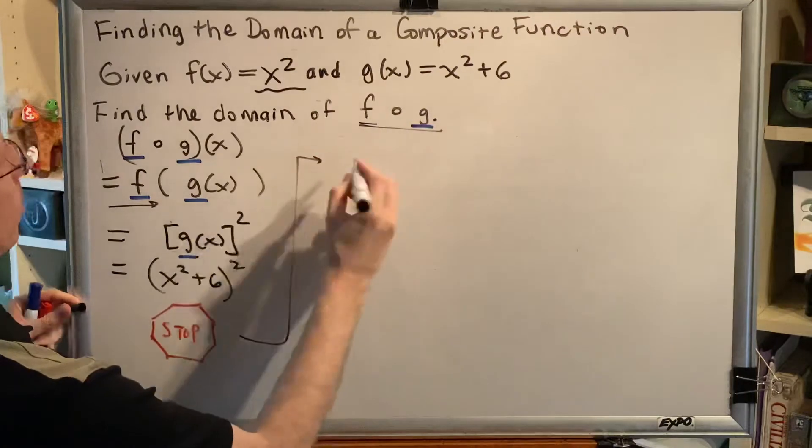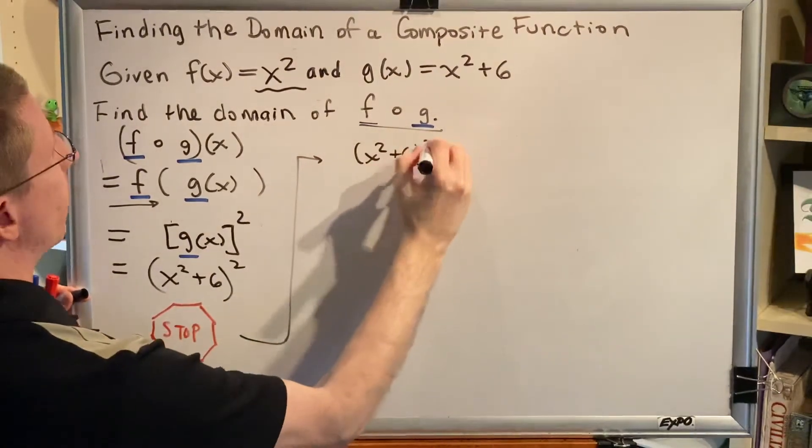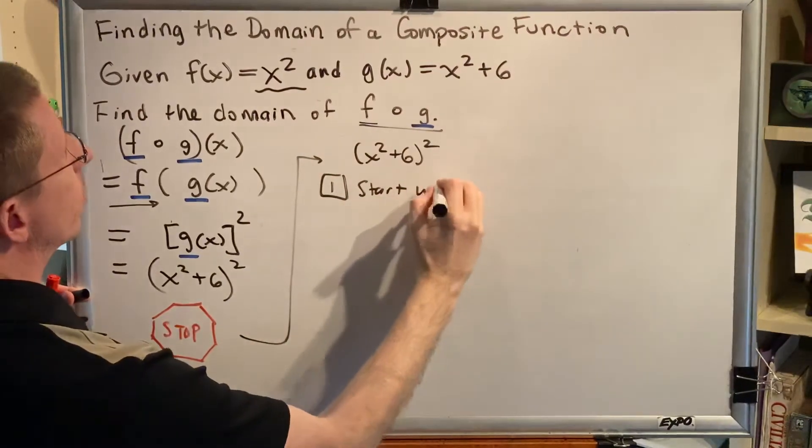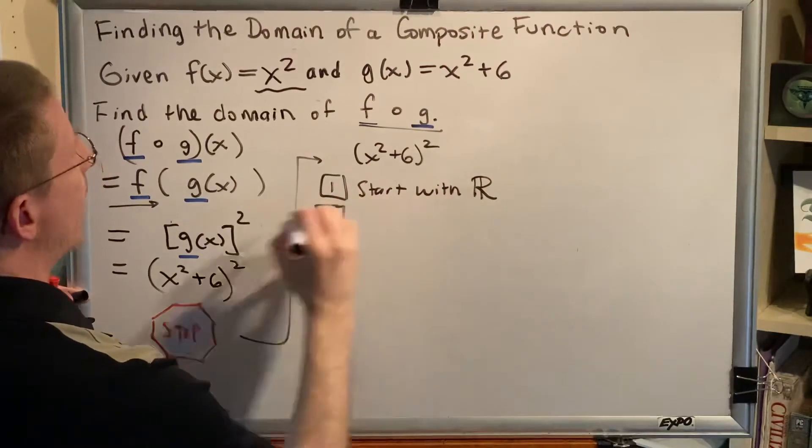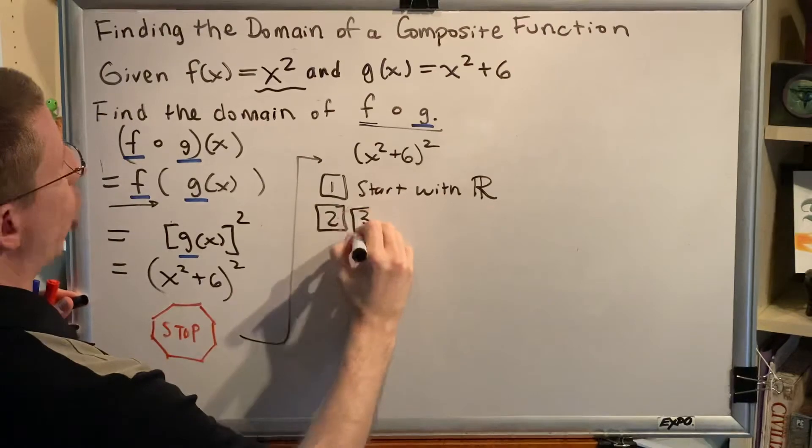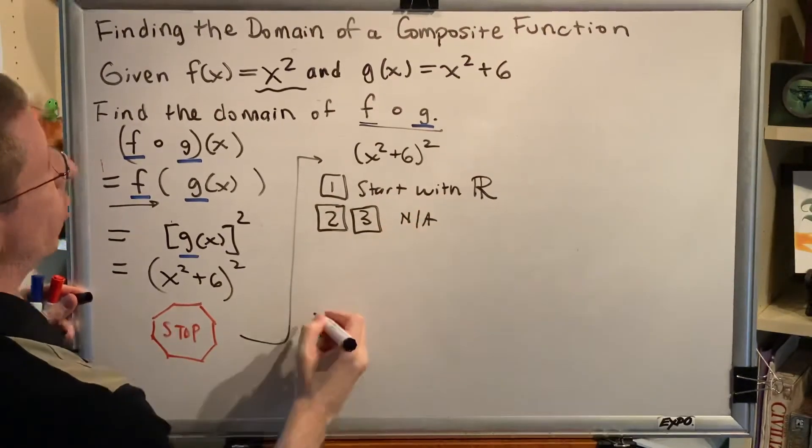Let's proceed. So we have x squared plus 6, all in parentheses, squared. Step one, start with all real numbers. Step two, even radicands greater than or equal to zero. We don't have any. Step three, log arguments greater than zero. We don't have any. So steps two and three are not applicable.